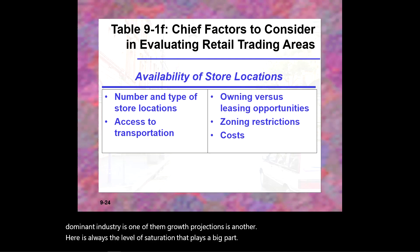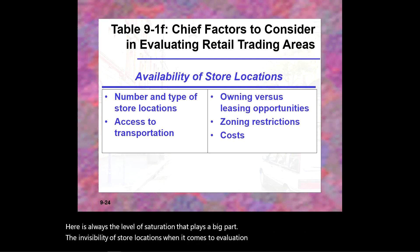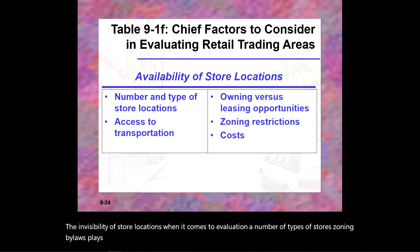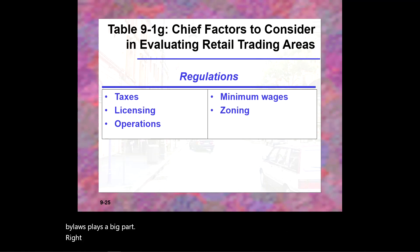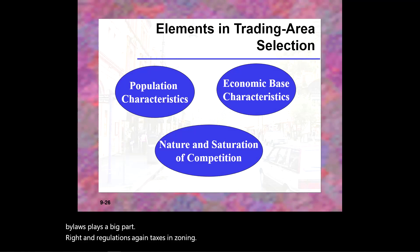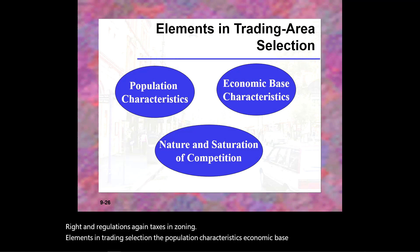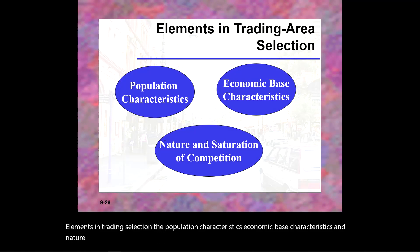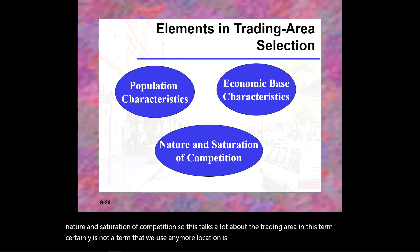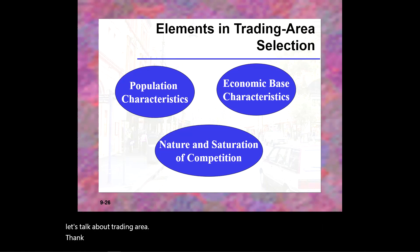Availability of store locations also matters, including the number of types of stores, zoning bylaws, and regulations. The key elements in trading area selection are population characteristics, economic base characteristics, and the nature and saturation of competition. Trading area analysis is a term we don't use as commonly anymore — location is still the dominant term — but understanding trading areas remains important.